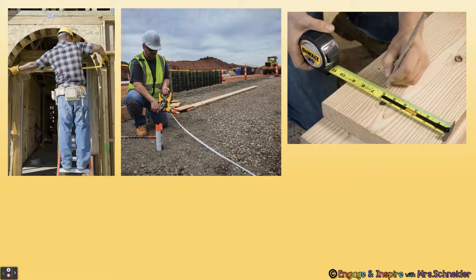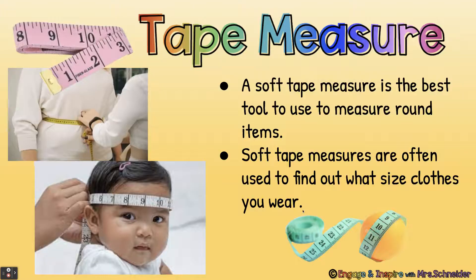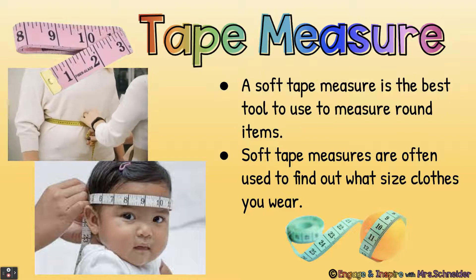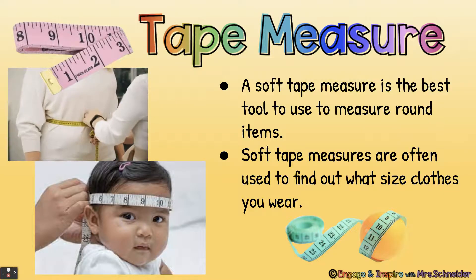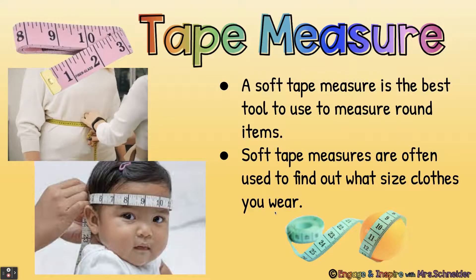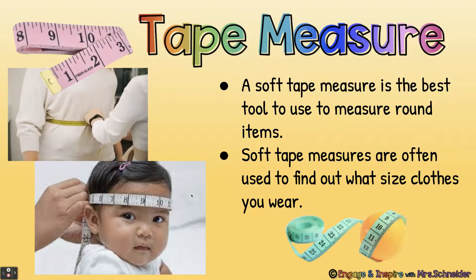A tape measure is the best tool to use to measure long items, though you can measure smaller items as well. They use it a lot in construction. There are also soft tape measures — a soft tape measure is the best tool to use to measure round items. Soft tape measures are often used to find out what size clothes you wear, and when we go to the doctor as little babies, the doctor measures our head circumference with the soft tape measure.